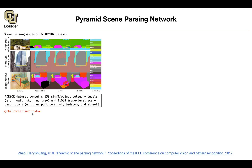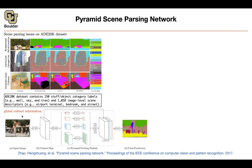So how do you incorporate context information? One option is atrous convolutions, which increase the field of view. The other is pyramid pooling: you take your image, push it through your CNN, get a set of feature maps. Previously we pooled everything to a single vector to get global information. Now you can divide your feature map into four components, for instance, and pool per each sub-feature map.